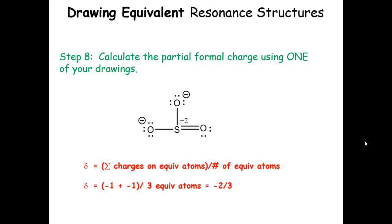Let's calculate the partial formal charge. We have three equivalent atoms, each one can have the double bond. Two of them have negative one formal charge. Summing those together, we get negative two divided by three equivalent atoms, giving us a negative two-thirds partial formal charge on each oxygen.